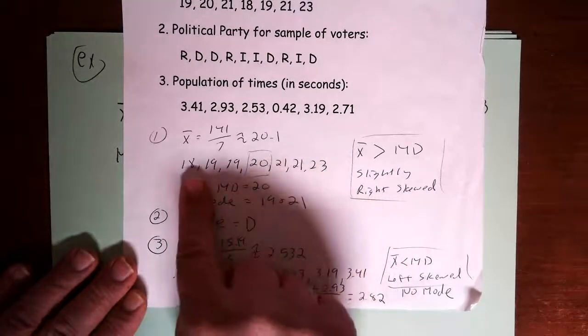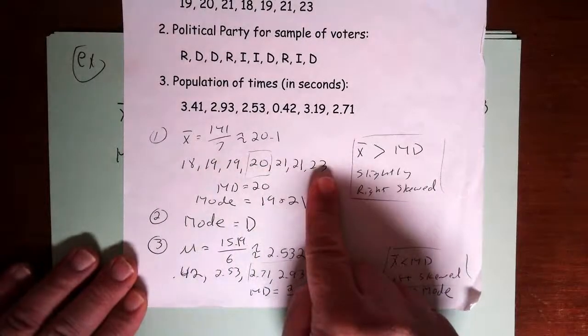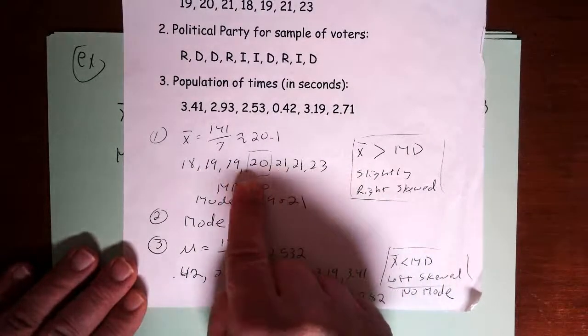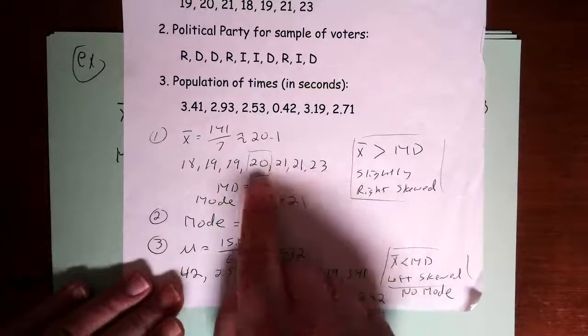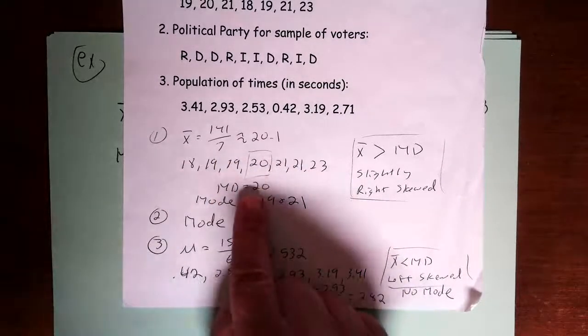And now for the median, I have to put the data in order, and then the median is the middle value. In this case, it's 20. There's seven values in the data set, and 20 is in the center. So that's the median.